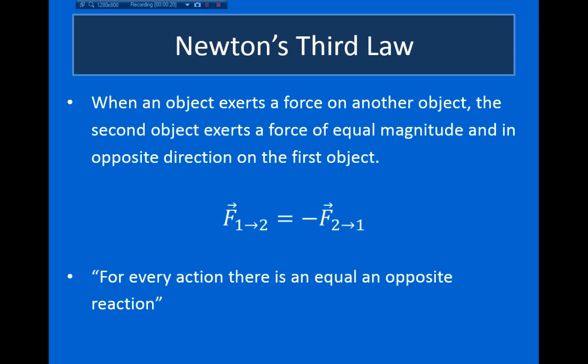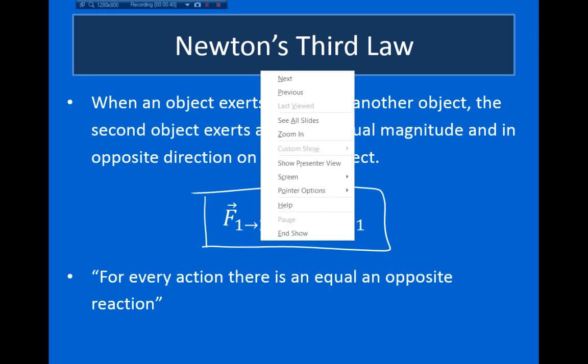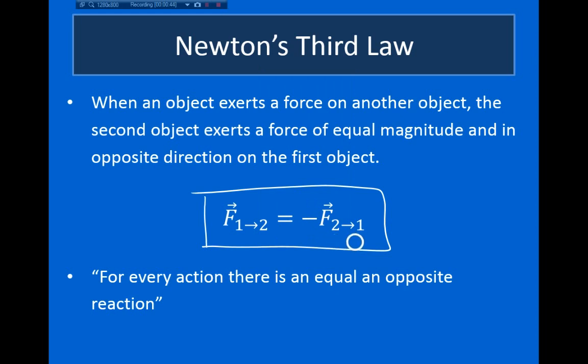So what exactly does this mean? Basically, what Newton's third law is saying is that when an object exerts a force on another object, this second object exerts a force of equal magnitude in an opposite direction on the first object. Writing this out as an equation: the force exerted by object one on object two is minus the force that object two exerts on object one, where this minus sign indicates that this force is in the opposite direction.